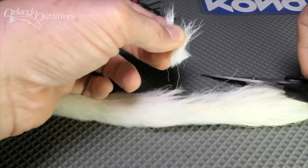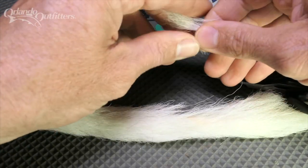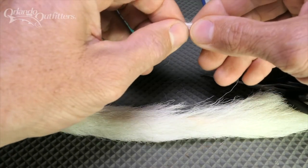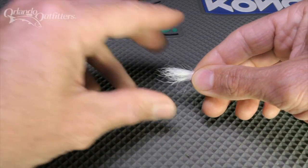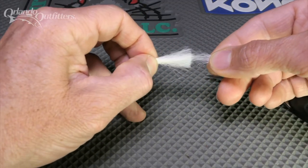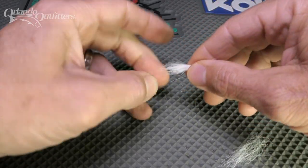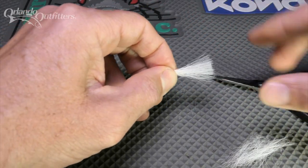Cut a small bunch of relatively long calf tail right at the hide. This is a little more than I need. I'll thin it out by pulling out the short hairs. You can spend some time stacking the calf hair to even it up, but I don't usually do anything other than pull out the short hairs and even up any longer hairs.